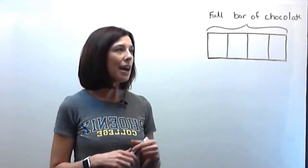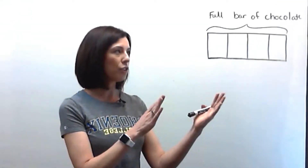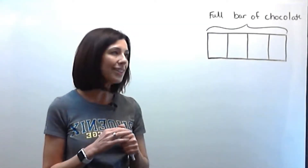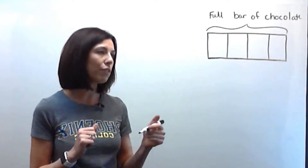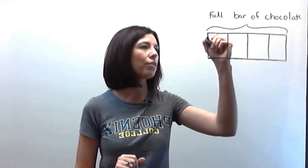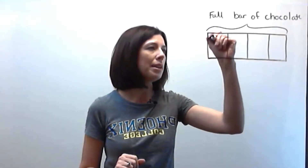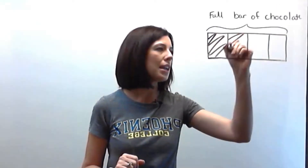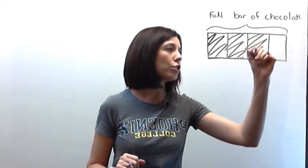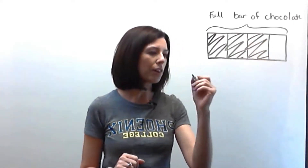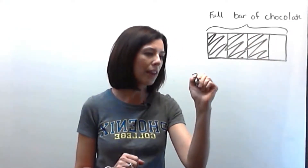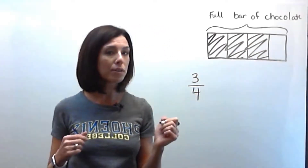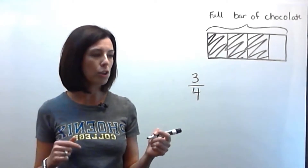We have here a full bar of chocolate, and we know that Jill has three-fourths of the full bar. I'm going to go ahead and shade in what Jill has. Before I go any further, I should point out that since Jill has three-fourths of the full bar of chocolate,